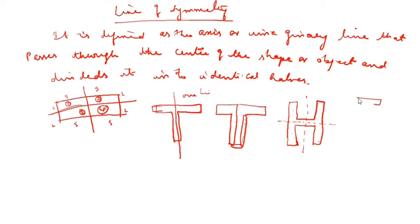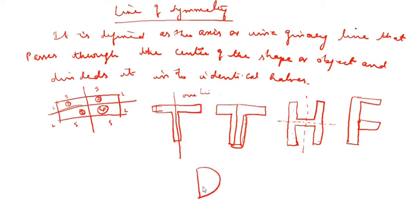You can take it as F. F has no line of symmetry. You can take it as D. D has one line of symmetry.